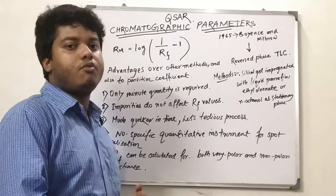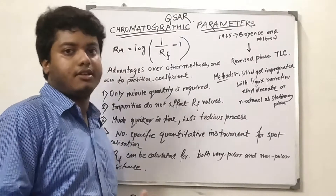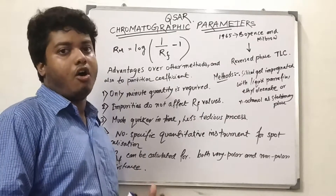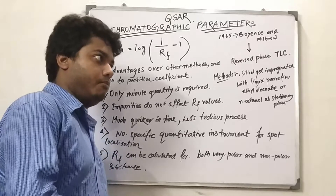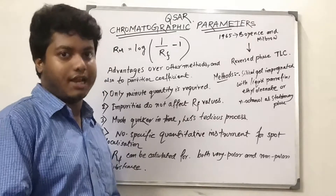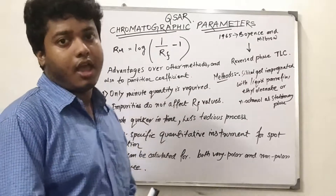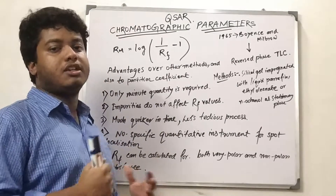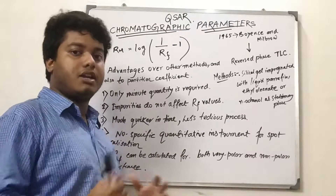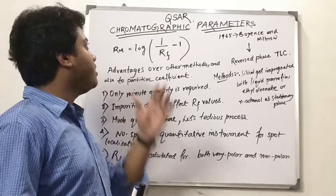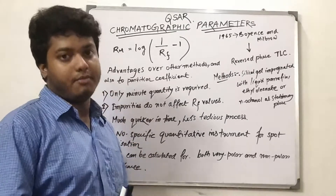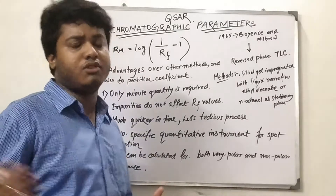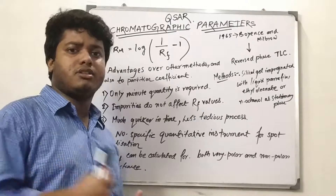In the previous lecture we discussed the linear and nonlinear dependency of the log t value over biological activity, that is the lipophilicity value. Here we will approach the determination of the partition coefficient in another way — by utilizing chromatographic parameters. Why are chromatographic parameters important, and why can we utilize them in place of the partition coefficient?